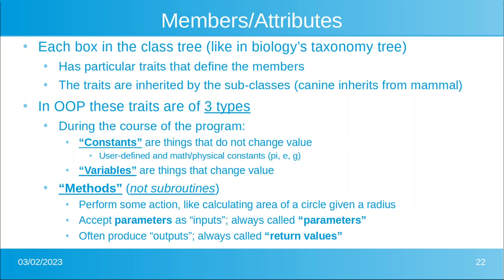Now, during the course of a program — while it's running — there are constants. These are things that do not change value, such as the value of pi, the value of e, the square root of minus one, or the gravitational constant at sea level. Variables are things that do change value, like the speed of my motorcycle or how full my stomach is.